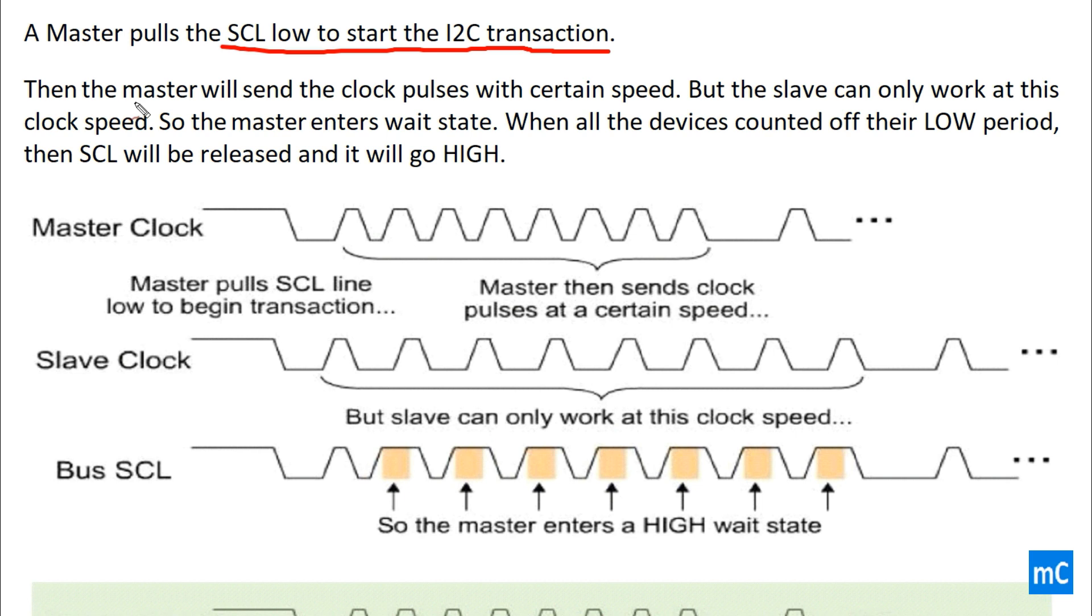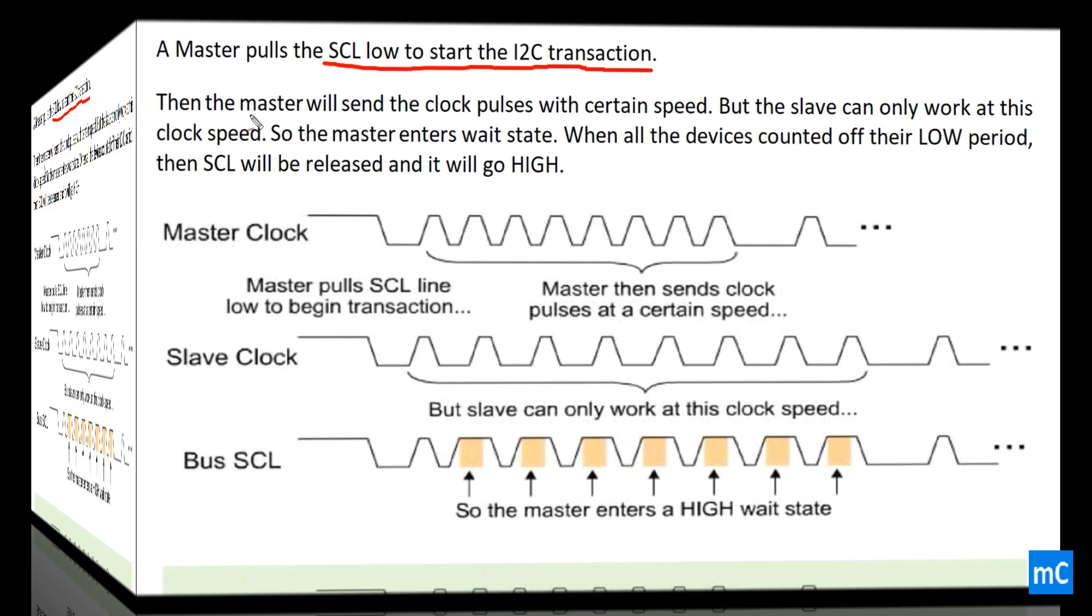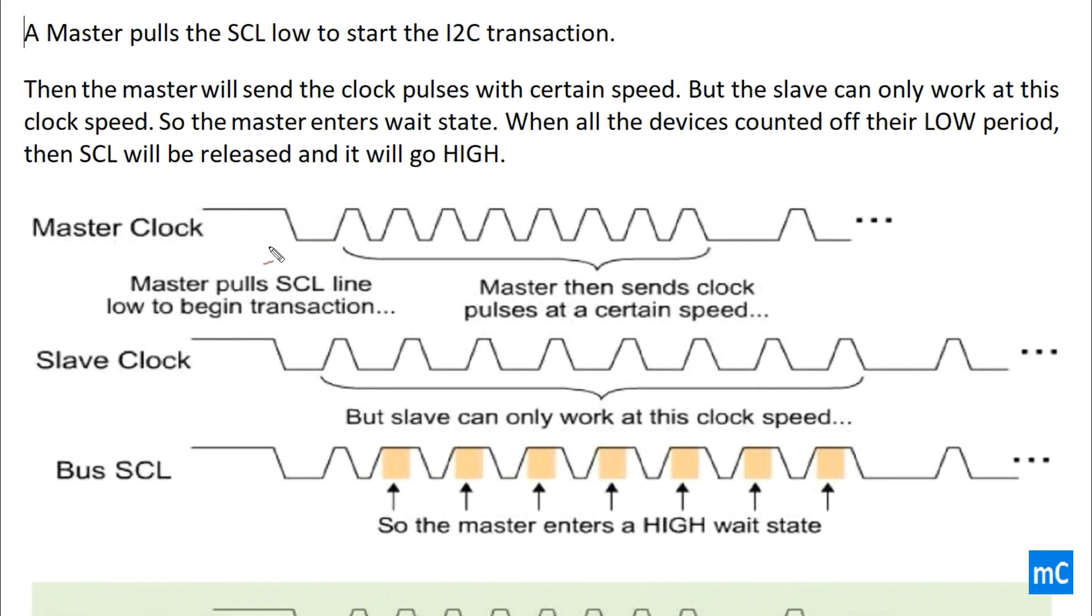When all the devices cut off their own low period, then SCL will be released and it will go high. Here you can see the master clock. Master pulls the SCL line low to begin the I2C transaction. Here it is pulled low. And then the clock is given.